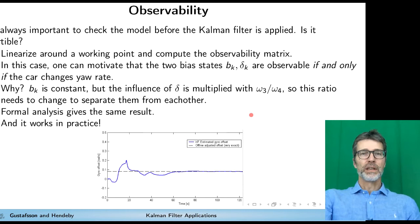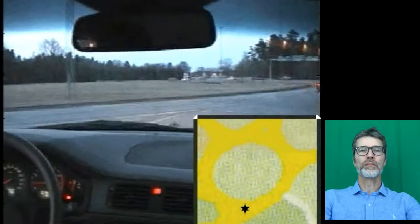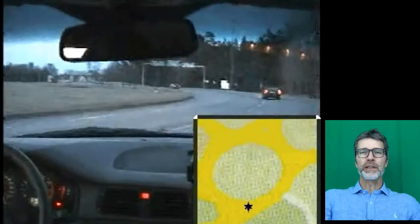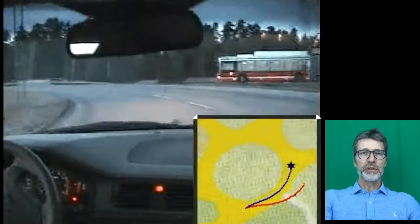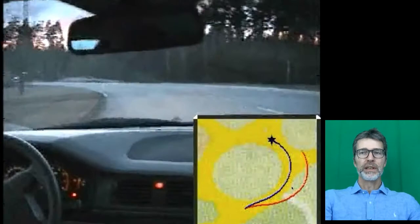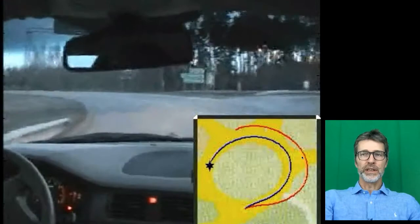We have done some tests in Valla Rondellen. So what you see here is a test drive in Valla Rondellen. We will see two different curves here. The red one is the kinematic model where we do not use the virtual yaw rate sensor computed from the wheel speeds. And the blue one is the kinematic model where we use the virtual yaw rate sensor. And in that way we can eliminate the drift in the gyro. So the red curve will suffer from this drift in the yaw angle while the blue one can compensate for it.